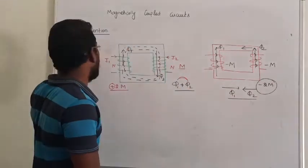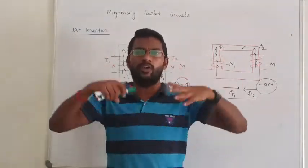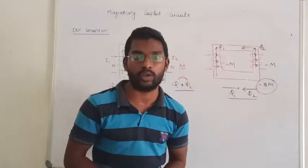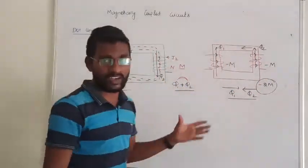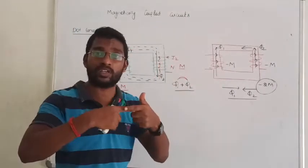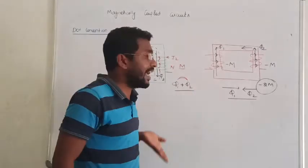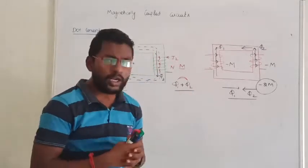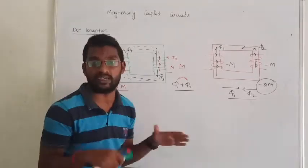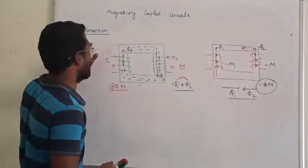So what is the purpose of the dot convention? In a big circuit where 5 or 6 inductors are connected in series or parallel, those kinds of combinations come up. The direction of the flux must be visible. We have to calculate the value of total inductance, and that task becomes tedious. To make the analysis easier, we use what is called the dot convention.